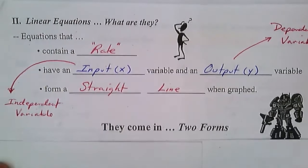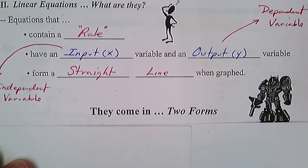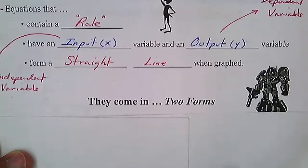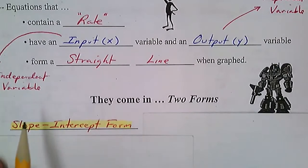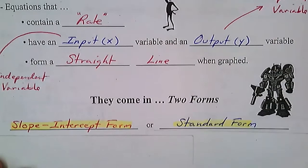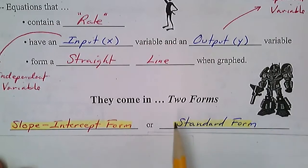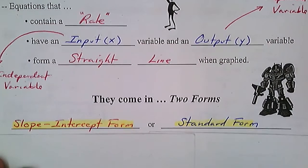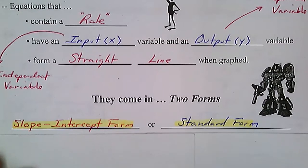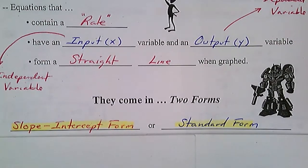Linear equations come in two basic forms: slope-intercept form, which I've begun to introduce, and standard form. I'm going to pause the video here — this will be part one. I'll start a second video, part two. We'll see you right back for part two.